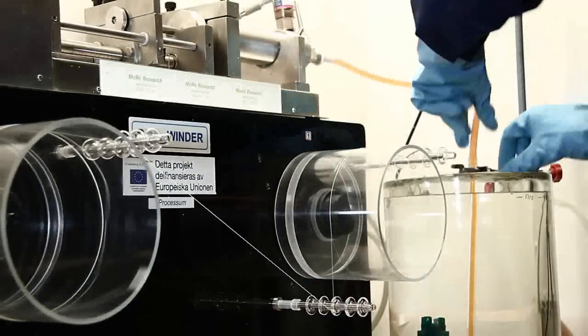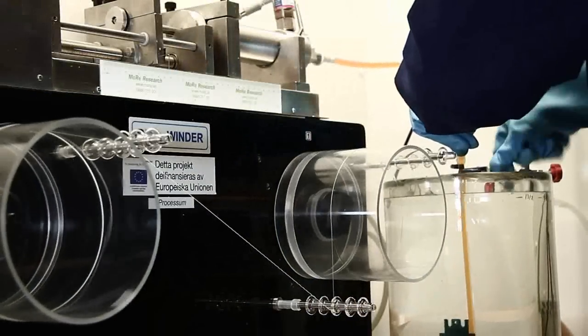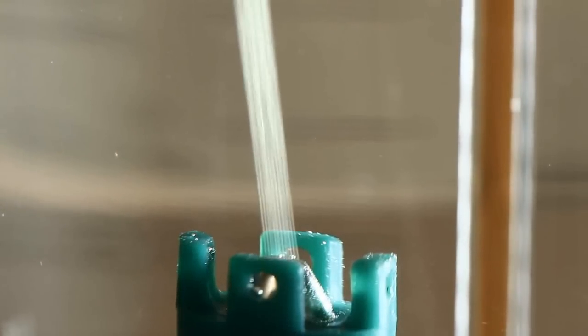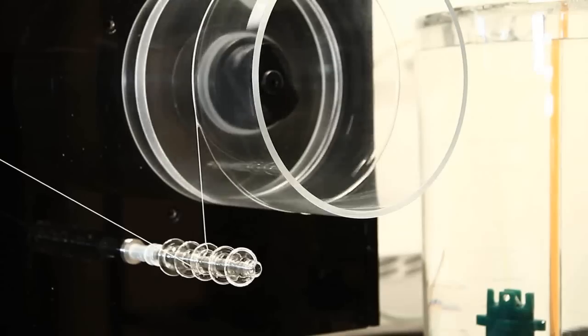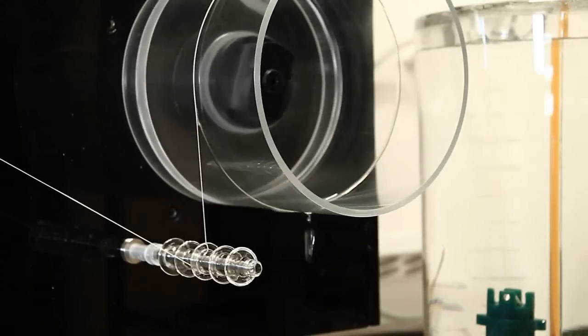When the viscose comes in contact with the spin bath, the cellulose is regenerated and a viscose filament is formed out of each hole in the spinneret. The filaments are stretched between two wheels.